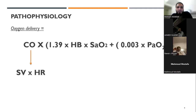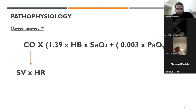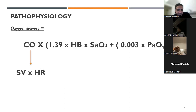To simplify: it's cardiac output multiplied by 1.39 (the hemoglobin carrying capacity of oxygen) multiplied by oxygen saturation — how much percentage of hemoglobin is saturated with oxygen — plus the dissolved oxygen in the blood determined by partial pressure. What you need to know is that cardiac output has the biggest impact. Cardiac output equals stroke volume multiplied by heart rate.